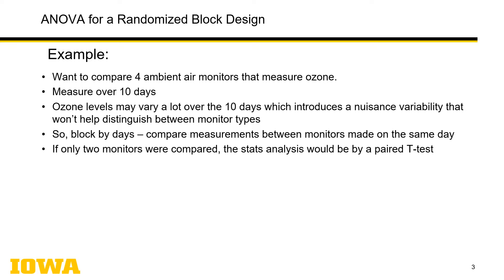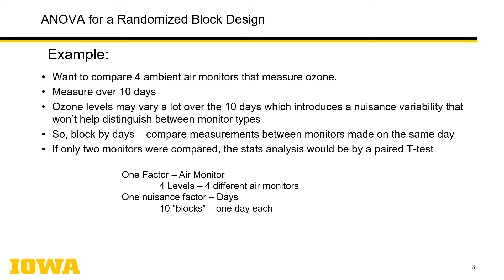That's a one-way analysis of variance if that's all we care about. But you're aware that ozone levels over these days could add enough variability in your measurements that it's going to be hard to distinguish between monitors A, B, C, and D. So the days become a nuisance factor. We're going to block by days and then compare the measurements between monitors made on the same day. If there were only two monitors — A and B — this would be completely analogous to using a paired t-test as referred to in Module 12.